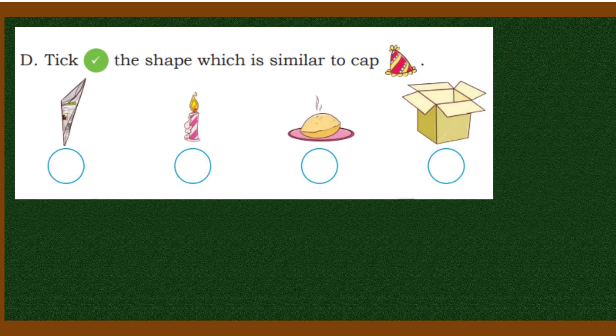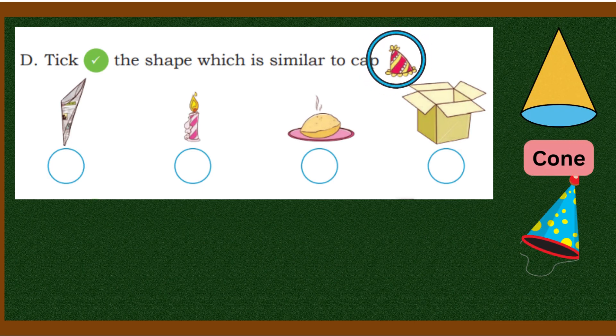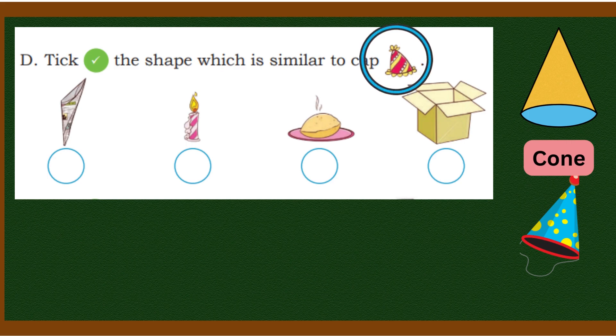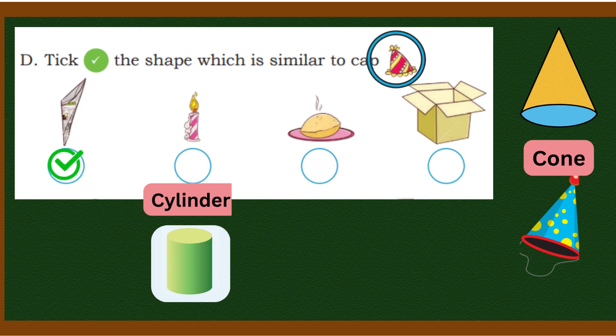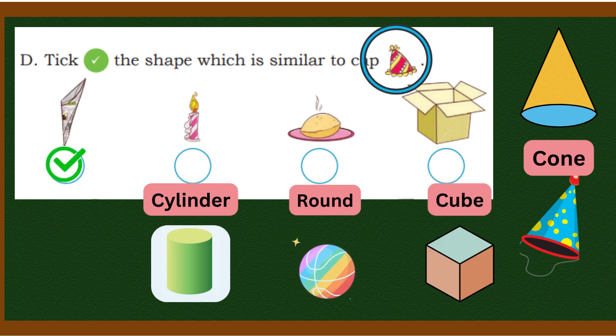We will tick the shape which is similar to cap. Which looks like cap, we have to tick. That means we have to tick cone shape. Which one looks like it? Very simple - this paper cone. Because candle's shape is cylinder, roti's shape is round, and box's shape is cube.